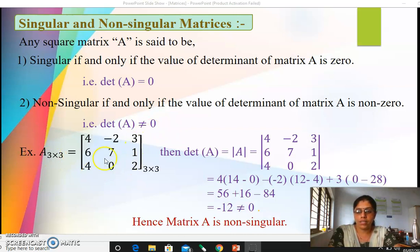Let's see one example. It's a 3 by 3 matrix with elements 4, minus 2, 3, 6, 7, 1, 4, 0, 2. To check whether it is singular or not we have to write the matrix into determinant form first. You have to write this step compulsory: determinant of A, or you can write into two vertical bars and put the elements into the determinant form first and then expand. You are not supposed to expand that matrix itself.